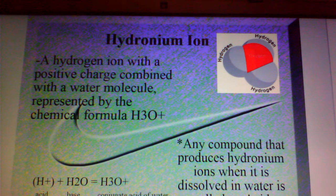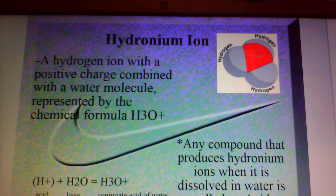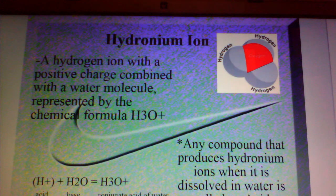Acids turn litmus paper red when they are exposed to them. The composition of a hydronium ion is an H+ acid combining with an H2O water molecule to form an H3O+ hydronium ion, which is the conjugate acid of water.